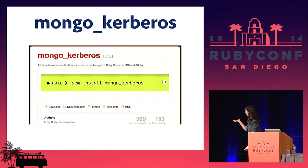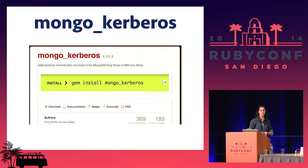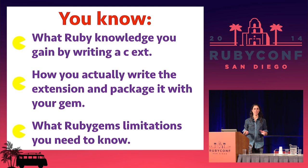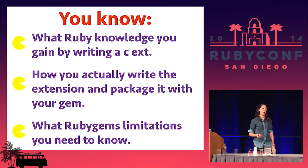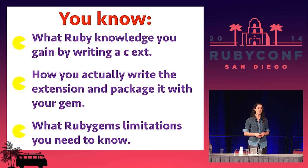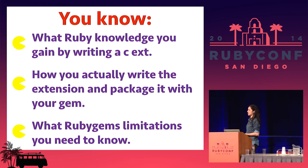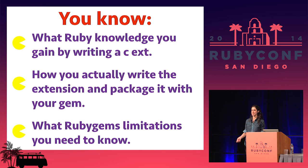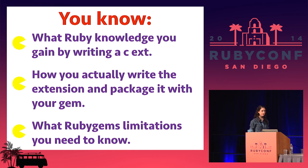We have 309 downloads of mongo_kerberos, and I can assure you 300 of those are our testing environment. But I've learned a lot from that. I hope that if you get the chance to write a C extension, it'll be a little more clear than it was for me when I started out doing things by trial and error. You'll gain Ruby knowledge by writing a C extension, understand what the C implementation of Ruby actually is, know how to write and package extensions, and know the RubyGems limitation: if you abort in extconf.rb, you abort installation of your gem — not just the extension.